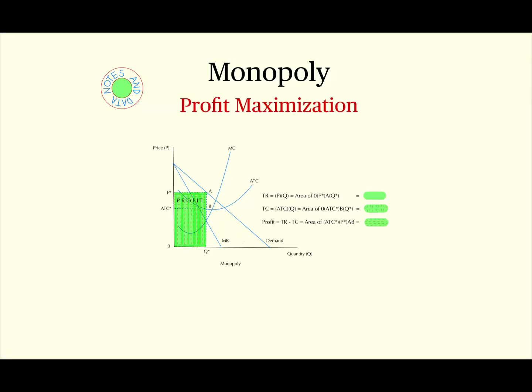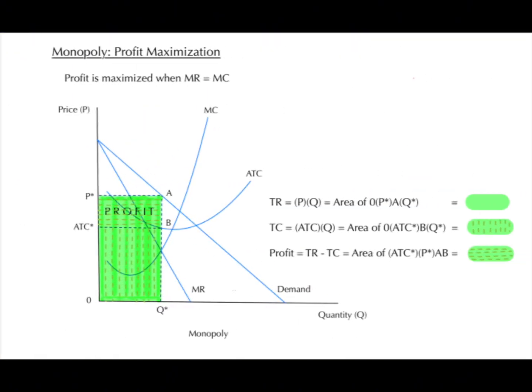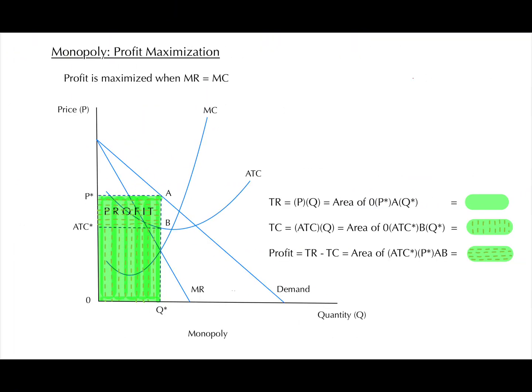Today, we are going to learn about profit maximization in a monopoly. As is the case in every other type of profit maximization, profit is maximized when MR, which is marginal revenue, is equal to MC, which is marginal cost.